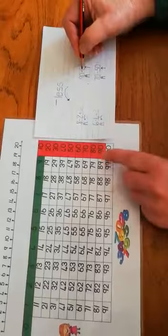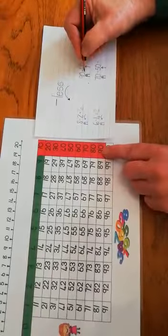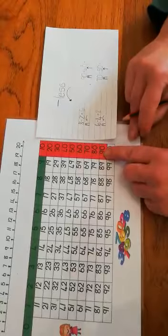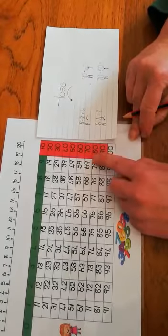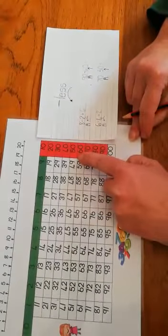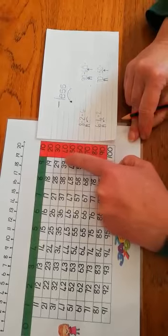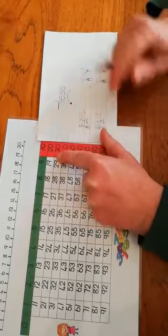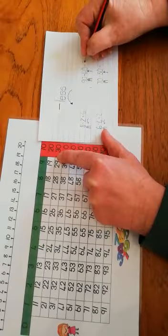So we've got 90. We put our finger on 90 and now we count 60. So we go 10, 20, 30, 40, 50, 60. And where we land is our answer. We landed on 30.